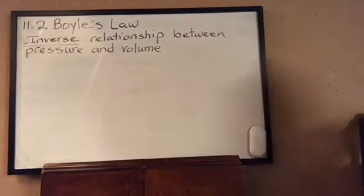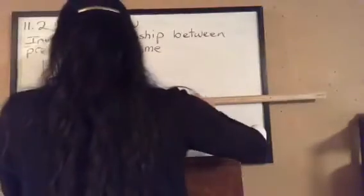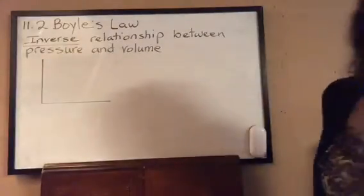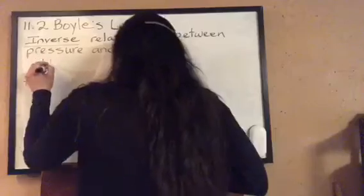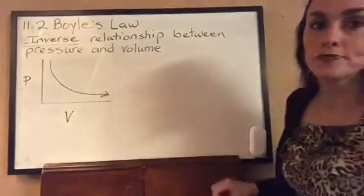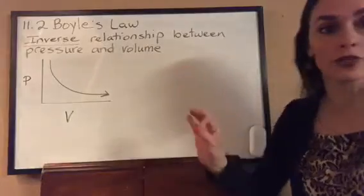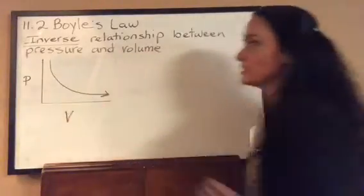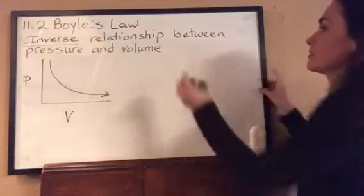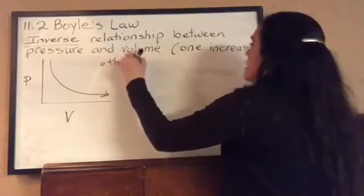If we were to graph data for Boyle's Law on an x-y axis — pressure on the y-axis and volume on the x-axis — we would see a decreasing function. It would never hit zero or go below zero because you still have gas particles. We don't have a negative number of particles, and without any particles, we don't have a gas. So we have a decreasing function showing the inverse relationship between pressure and volume.